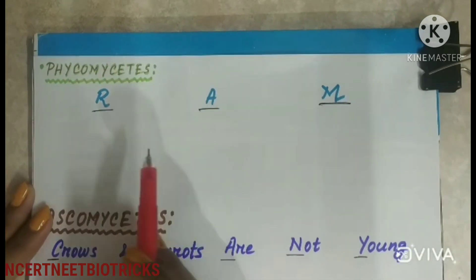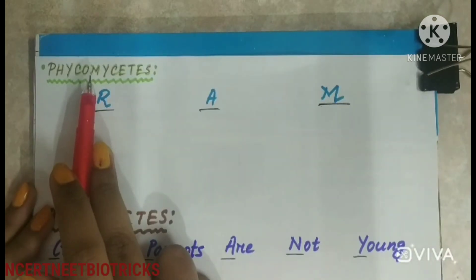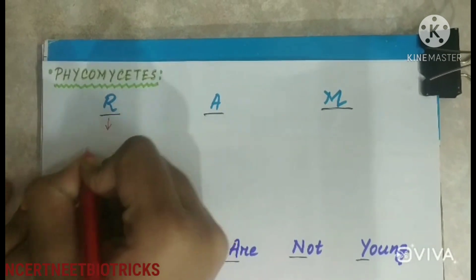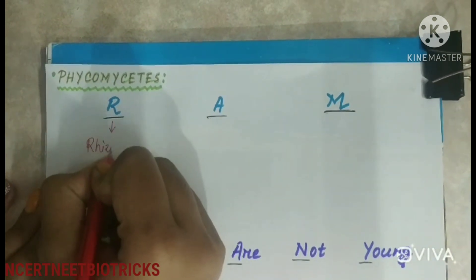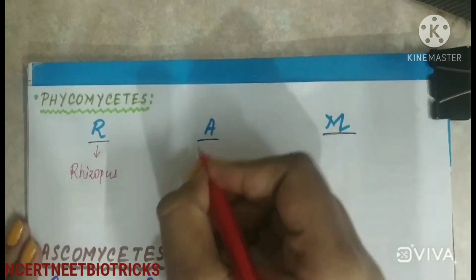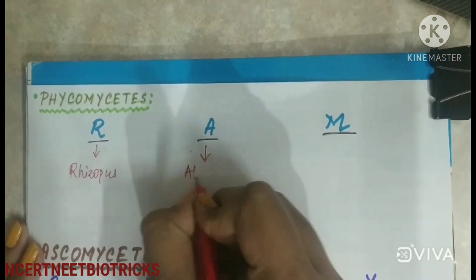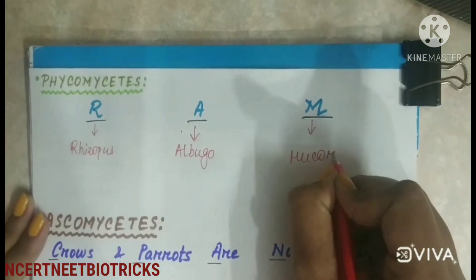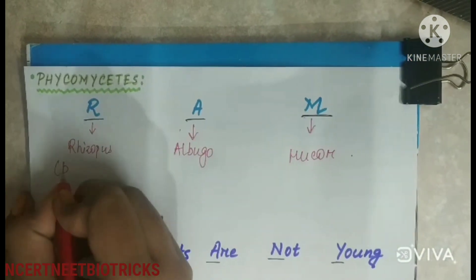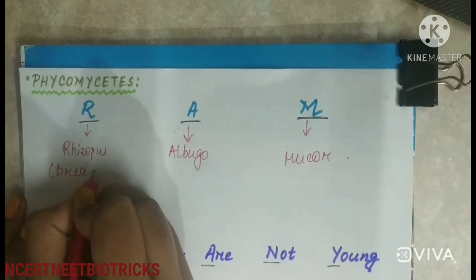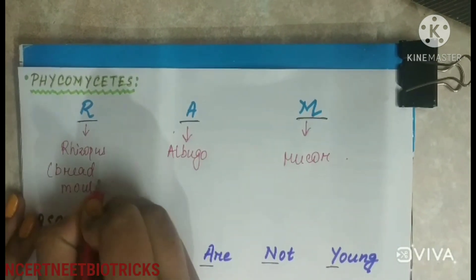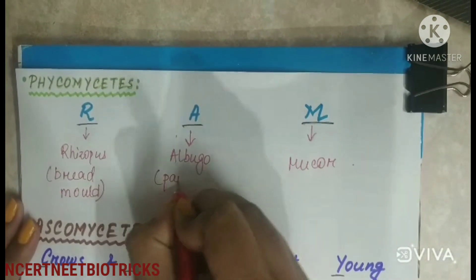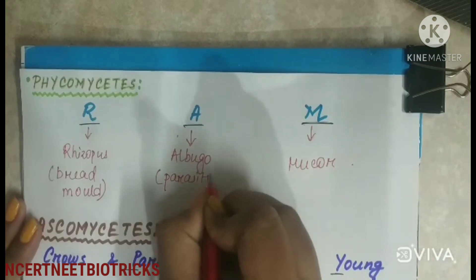Next, we will see how to remember the fungi groups. The first group is Phycomycetes, remembered as RAM — R for Rhizopus, A for Albugo, and M for Mucor. Rhizopus is the bread mould, and Albugo is a parasitic fungi on mustard.